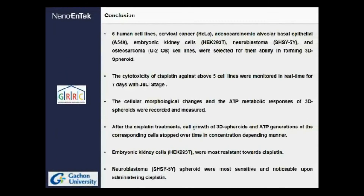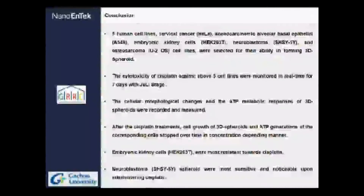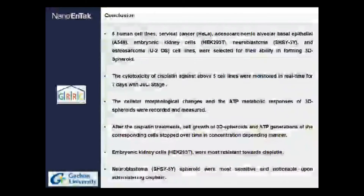In conclusion, we tested five human cell lines: cervical cancer, adenosarcoma alveolar basal epithelial cells, embryonic kidney cells, neuroblastoma cells, and osteosarcoma cell lines — all of which could form 3D spheroids well. The cellular morphological changes and ATP metabolic responses of 3D spheroids were recorded and measured in real time. After cisplatin treatment, cell growth of the 3D spheroid and ATP generation correlated well over time in a concentration-dependent manner. The embryonic kidney cells were most resistant toward cisplatin, while neuroblastoma cell lines were most sensitive. Real-time monitoring of 3D spheroids brought these interesting outcomes.